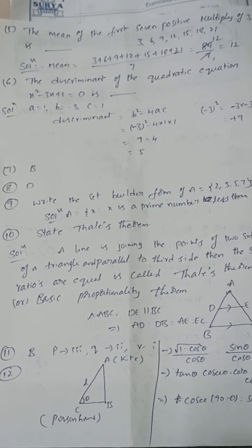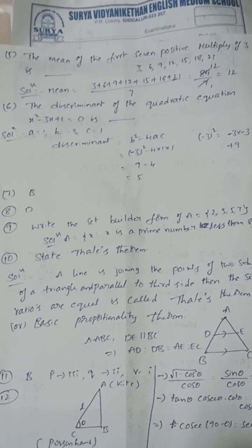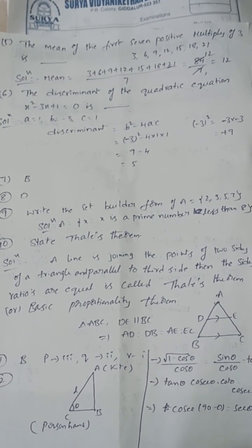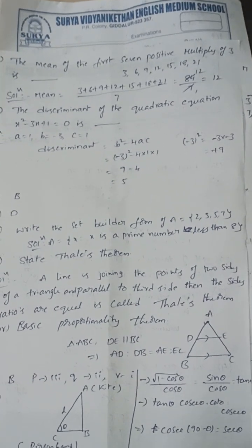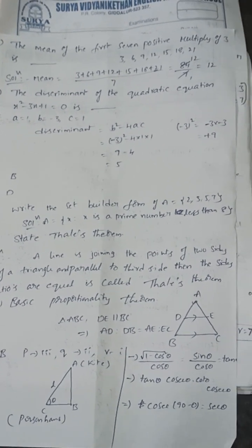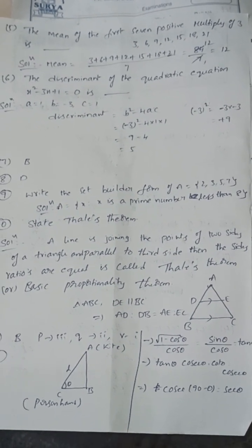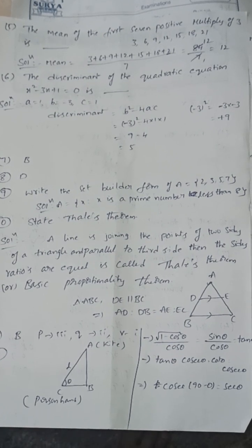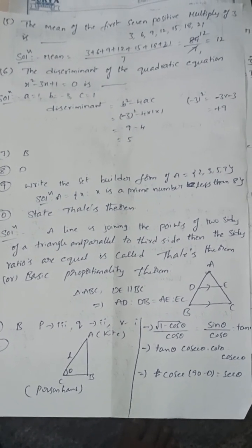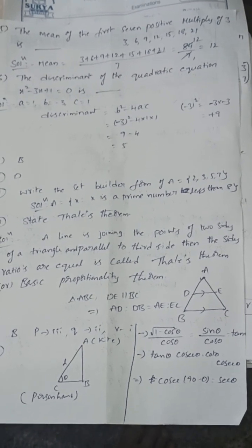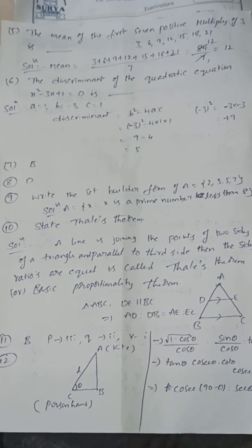Already discussed about questions 7 and 8. Next, question 9: write the set builder form A = {2, 3, 5, 7} — x is the prime number less than 8. Question 10: state Thales' theorem. If a line joins the points of two sides of a triangle and is parallel to the third side, then the sides' ratios are equal — this is called the Basic Proportionality Theorem. Here, let triangle ABC have DE parallel to BC, then AD/DB = AE/EC.